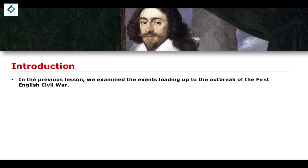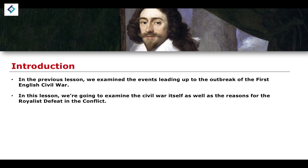In the previous lesson, we examined the events leading up to the outbreak of the First English Civil War. There are ultimately two civil wars, but the main one we're going to focus on is the first one. The reasons for this date as early as the beginnings of the Stuart period. We're looking at the Short Parliament, the Long Parliament, the Irish Rebellion, the Five Members incident, and then the fact that Charles would flee London to Hampton Court as both sides began to raise military forces. This lesson will examine the Civil War itself, as well as the reasons for the Royalists' defeat.